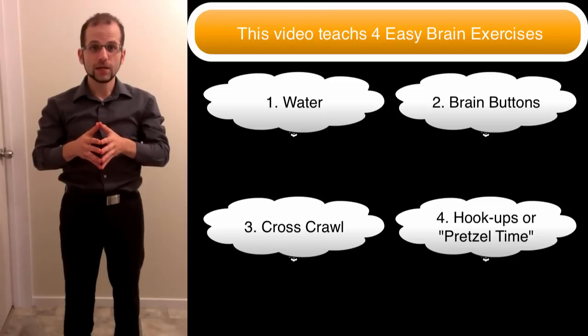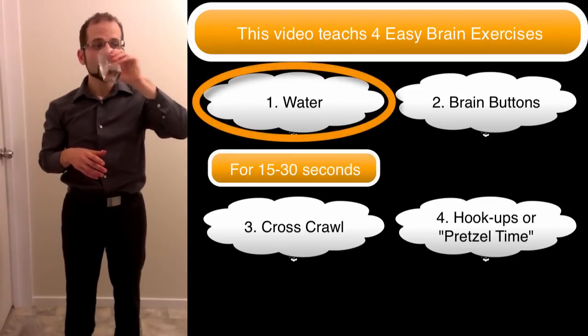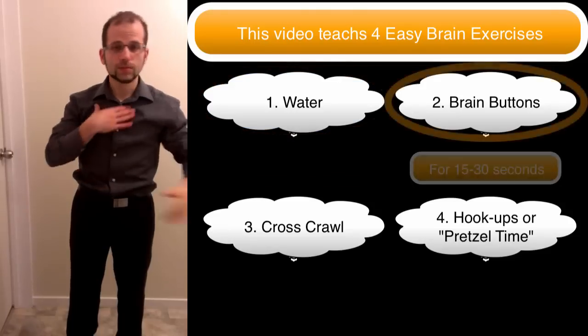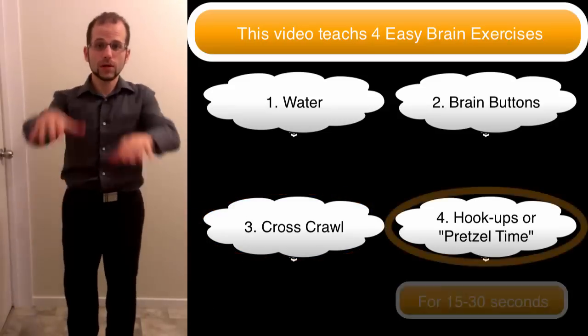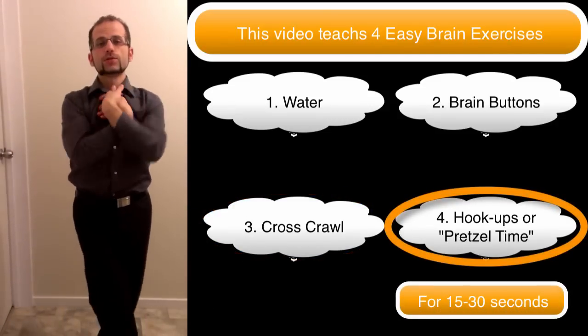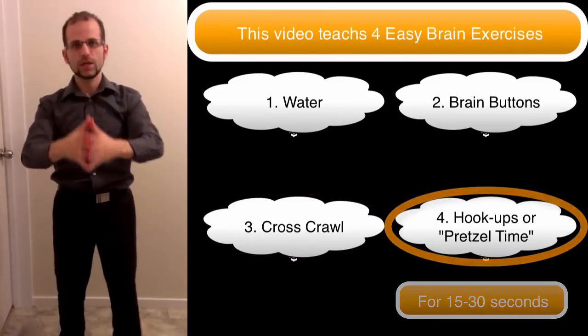So, again, with Brain Gym, the four movements are one, drinking water, two, brain buttons, three, cross crawl, and four, pretzel time. And there's two parts to it. You cross everything and then you uncross the pretzel like that.